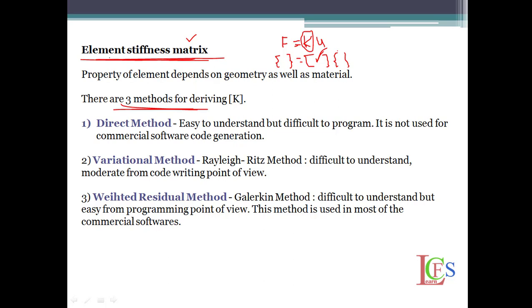There are three methods for deriving the stiffness element. The first one is the direct method, the second is the variational method, and the third is the weighted residual method. The direct method is easy to understand but difficult to program, and for that reason it is not used for commercial software code generation.